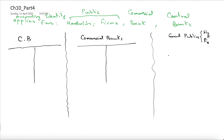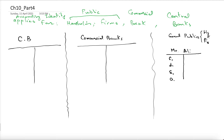Let's pick Mr. Ali. Mr. Ali has a company. He's got some cash, let's call it C1, and some demand deposit D1, some securities or savings S1, some other assets, he's borrowed some money L1, and he's got some equity or net worth Y1.